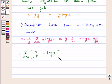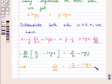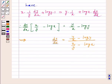This is equal to y/x minus log y. So this implies dy/dx equals (y/x minus log y) upon (x/y minus log x).